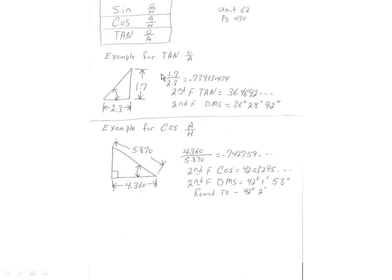This one is in unit 62. We have sine, cosine, tangent — opposite over the hypotenuse, adjacent over the hypotenuse, and opposite over the adjacent. This is the example for tangent. We have the opposite side at 1.7 and the adjacent side at 2.3. So if you take 1.7 divided by 2.3, equals this number, second function tangent, you will have 36.4692. Then if you hit second function DMS, you will have 36 degrees, 28 minutes, 9.2 seconds — round it off to 36 degrees, 28 minutes.